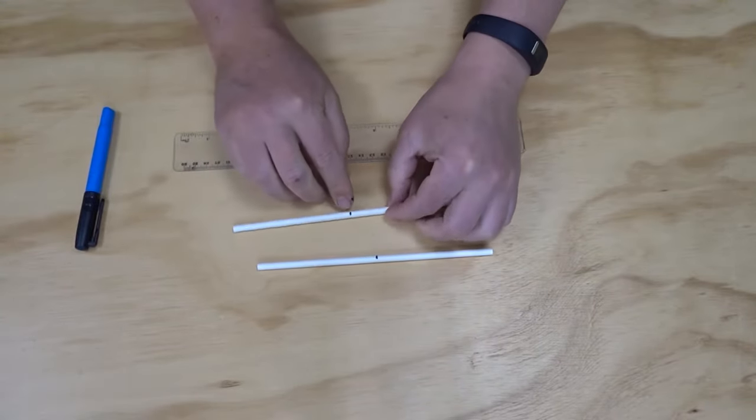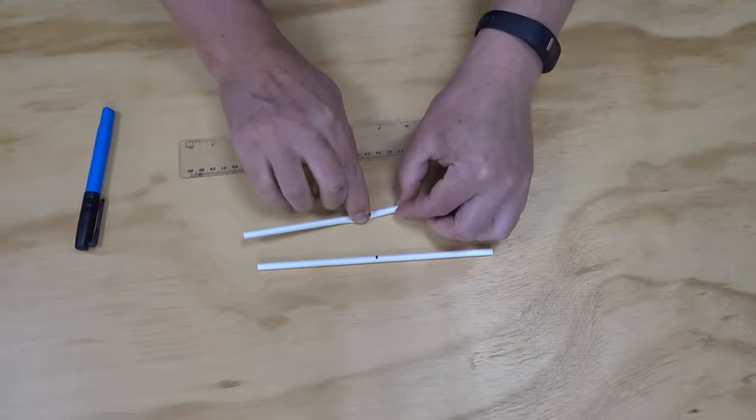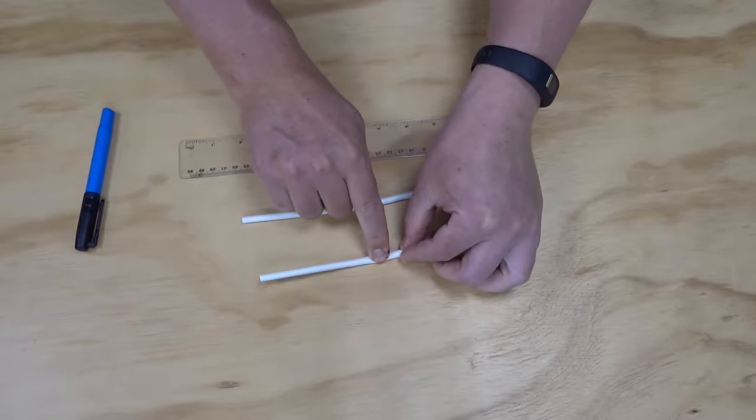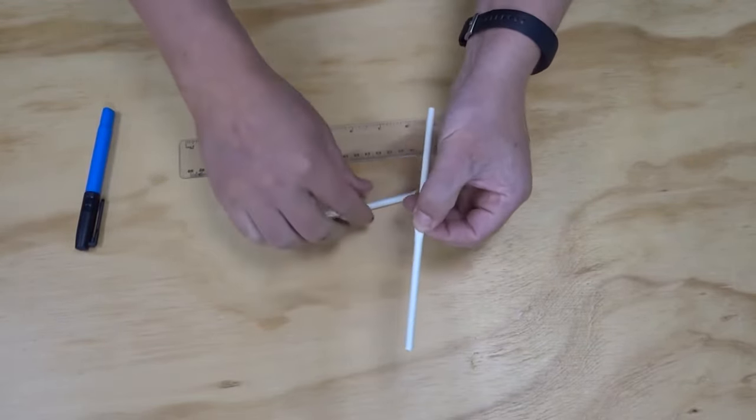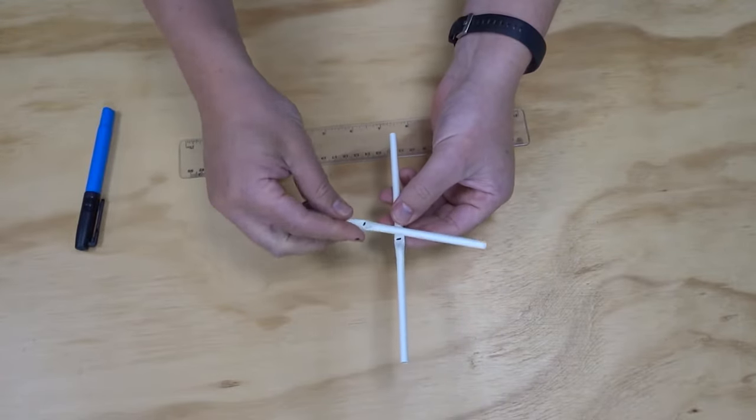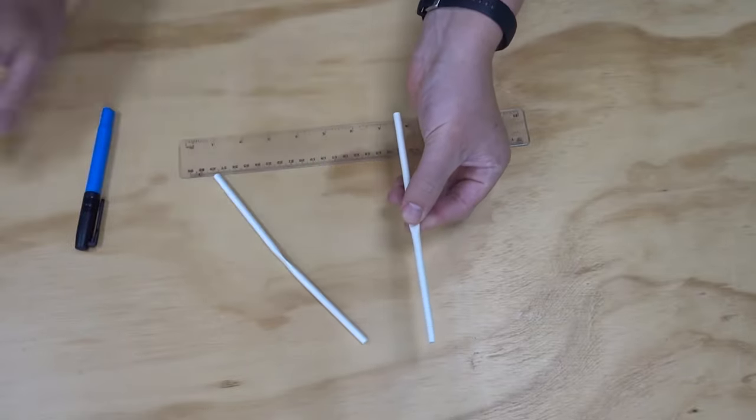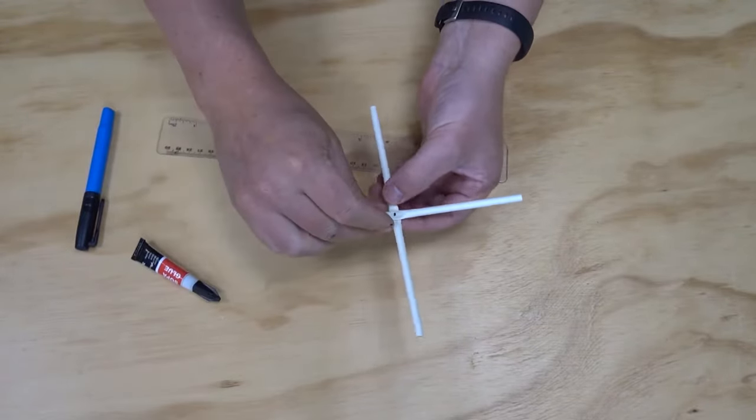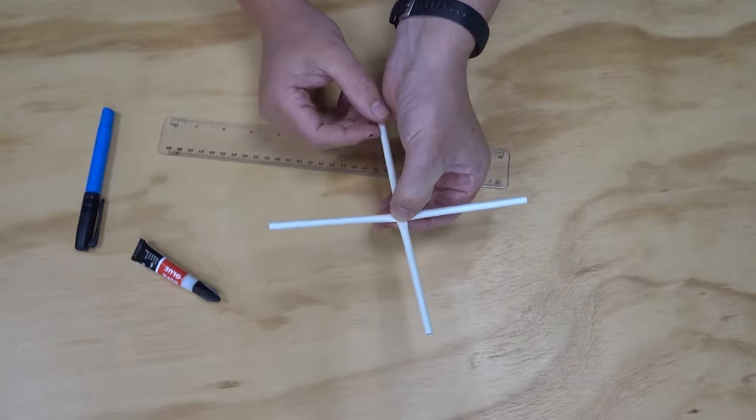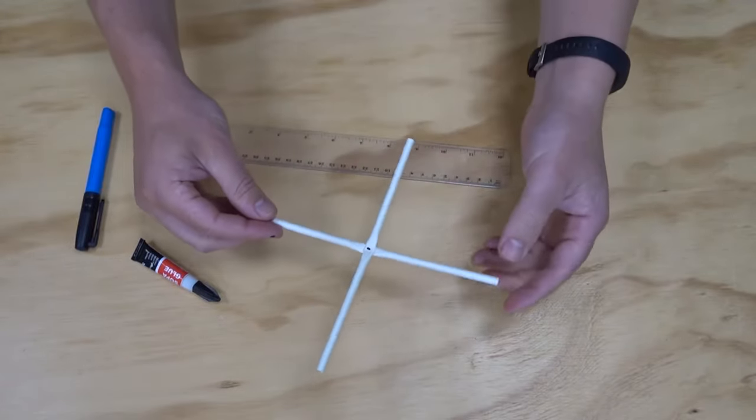Now that I know where the midpoint is, I'm going to slightly flatten my straws at the midpoint so I've got a little bit more surface area because here's where I'm going to use my glue, but you could use tape instead. I'm going to stick them in this X-shaped pattern.